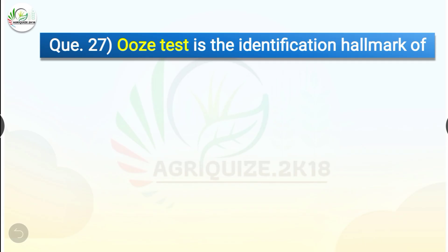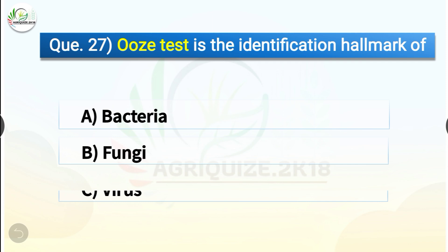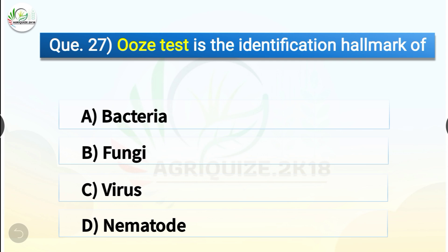Question number twenty-seven: Whose test is the identification hallmark of dash? The options are bacteria, fungi, virus, or nematode. The correct answer is option A, bacteria. Whose test is the identification hallmark of bacteria.